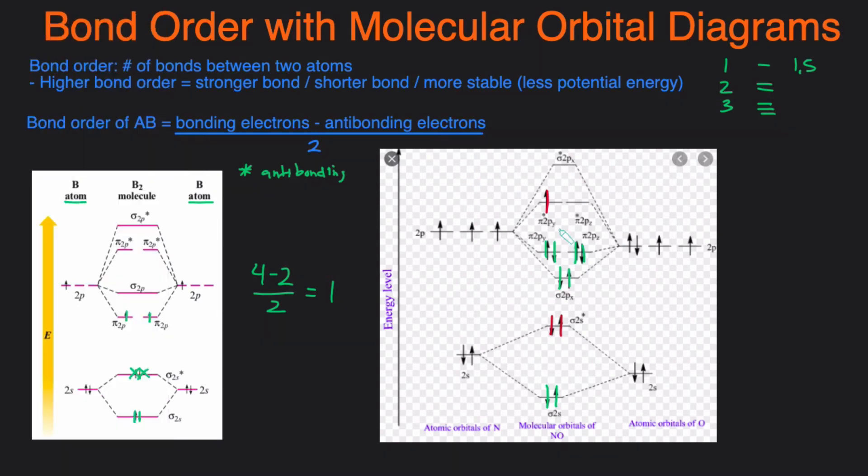So then the equation, the number of bonding electrons was eight. This is one, two, three, four, five, six, seven, eight minus three divided by two. And that will give you five over two. So it has a bond order of two and a half.